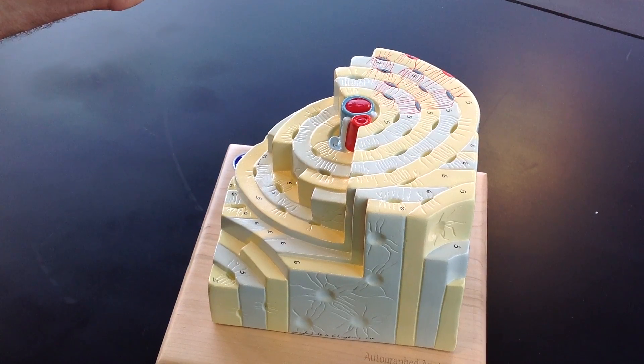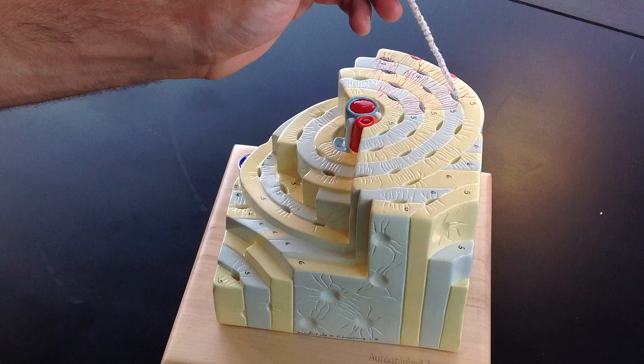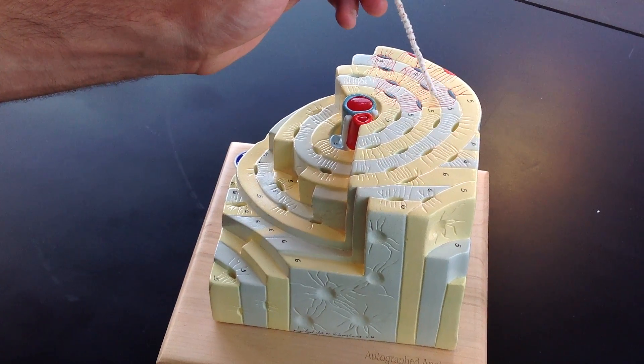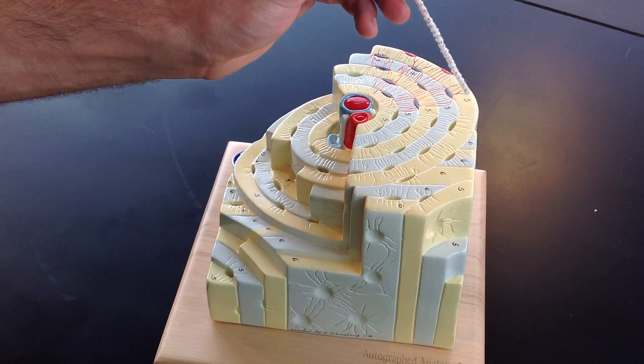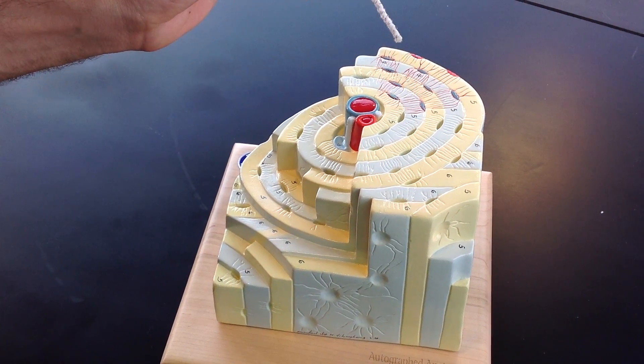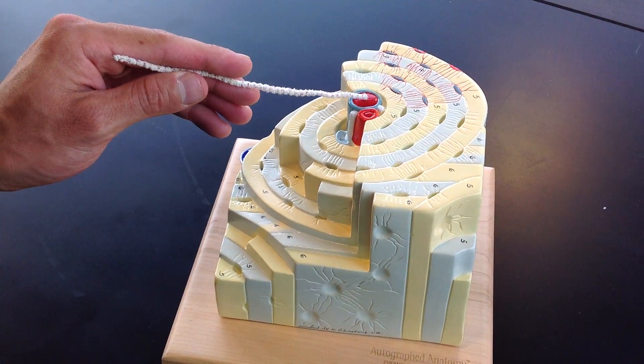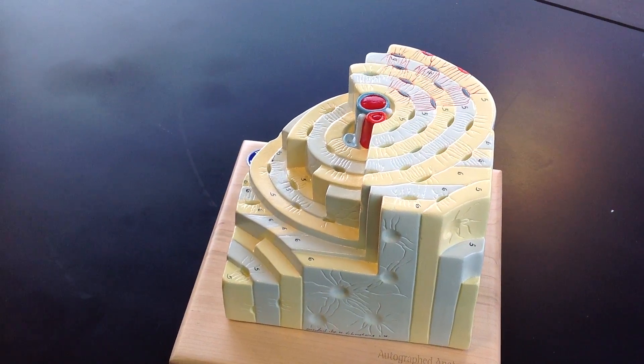Next you're going to have the canaliculi or canaliculus singular which are these little structures that run from concentric lamellae from one to another. And then what's not shown in here is from Haversian canal to an adjacent Haversian canal.